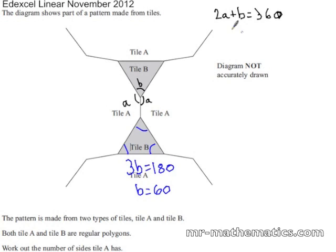We can now put this value back into our original equation. So 2A plus 60 equals 360. We can now solve this equation so 2A equals 300.